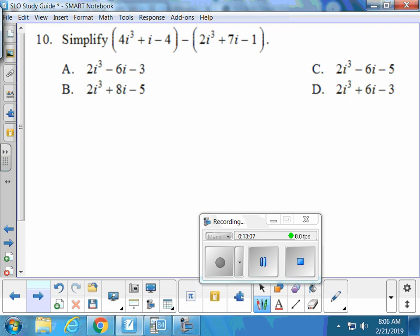Number 10. Looks like we're just going to distribute that negative to everybody in the second term and then add up all our like terms. So this negative will make it a negative 2i cubed. The negative will make it a negative 7i. And the negative will make it a positive 1. Now we're going to use our colors to do our like terms. This one and this one can combine to 2i cubed. These combine to negative 6i. And these combine to negative 3. Finally, I did one with no mistakes.